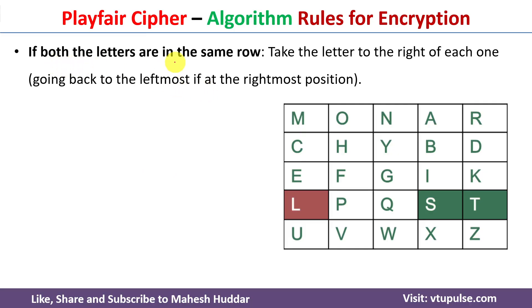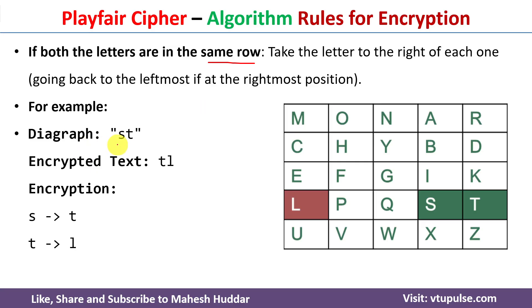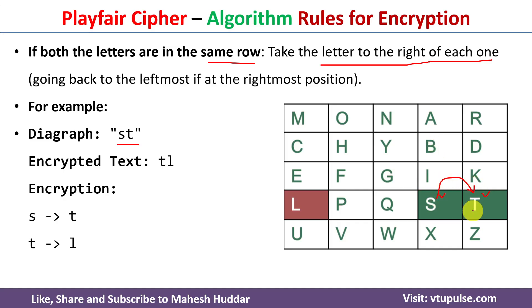The second encryption rule: if both letters of the digraph are in the same row, we take the letter to the right of each one. For example, digraph ST — S is present here and T is present here, both in the same row. S is encrypted as T, and T's next letter to the right wraps around, so T is encrypted as L. Thus ST is encrypted as TL.